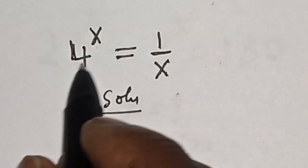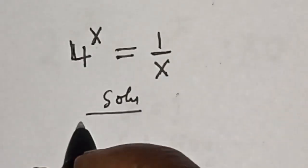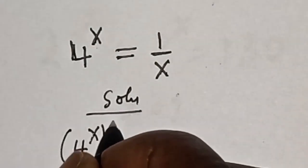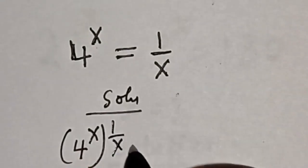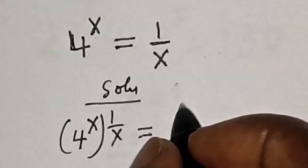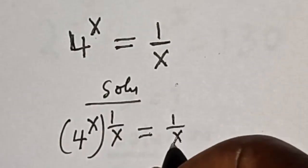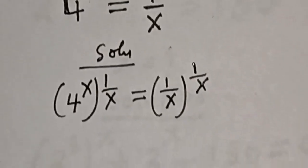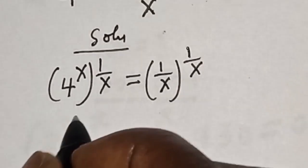Let's take the power of both sides by 1 over x. That is, 4 to the power of x, all raised to the power 1 over x, is equal to 1 over x, all raised to the power 1 over x.